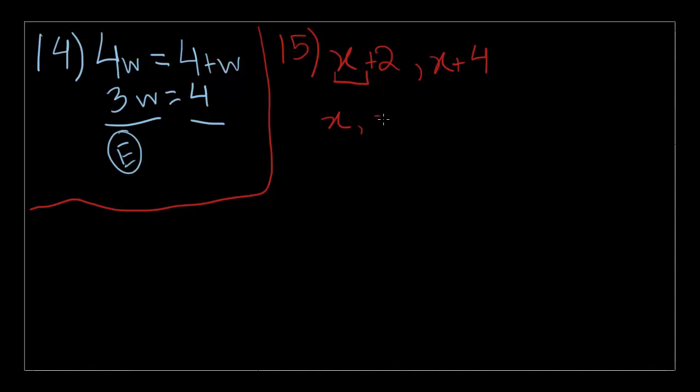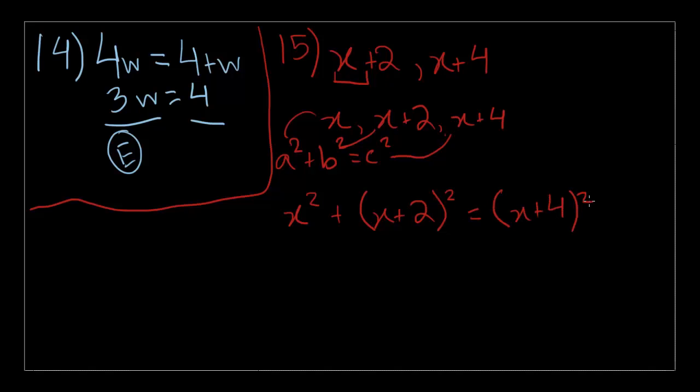And so our values are X, X plus 2, and X plus 4. So when you look down, you can see a lot of squares involved, and this should be a hint that you can use the Pythagorean theorem to find the value of X. So what is the Pythagorean theorem? A squared plus B squared equals C squared. So if we just plug these into the equation, then we get X squared plus X plus 2 whole squared is equal to X plus 4 whole squared. And that is equal to C.